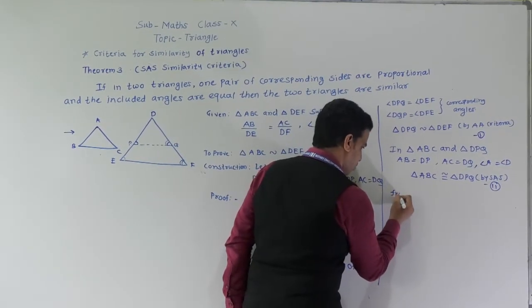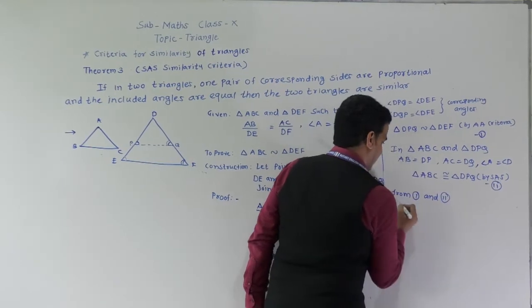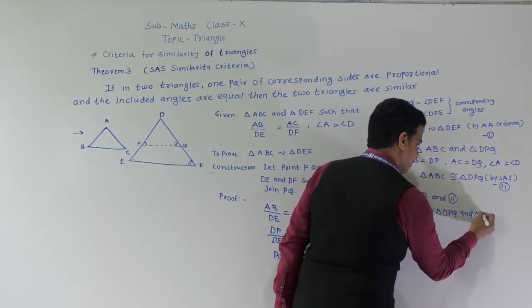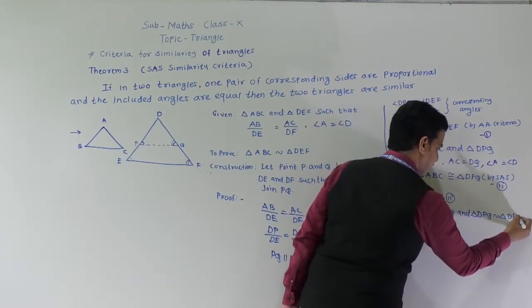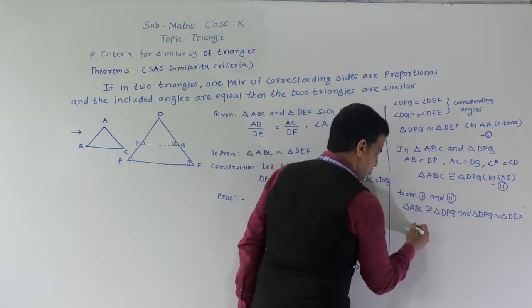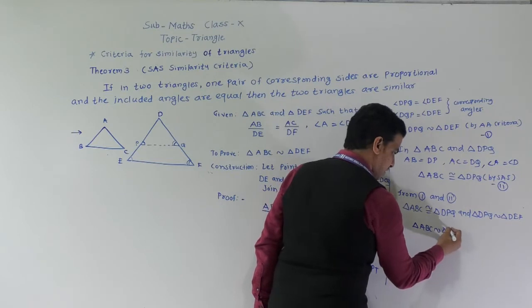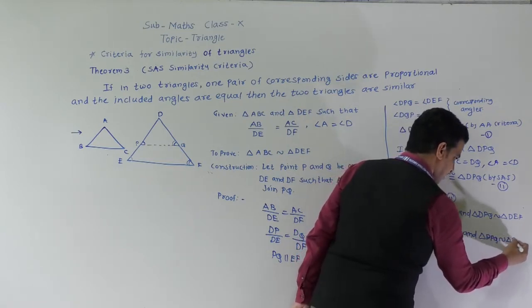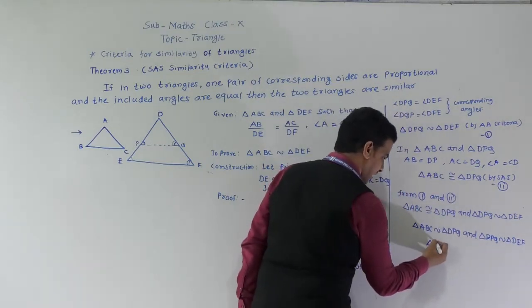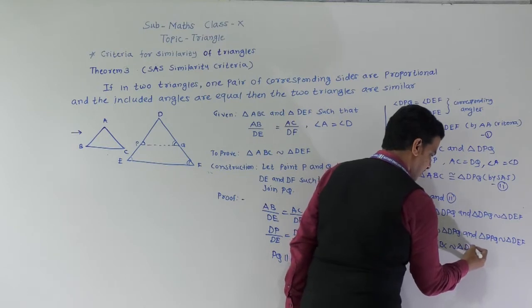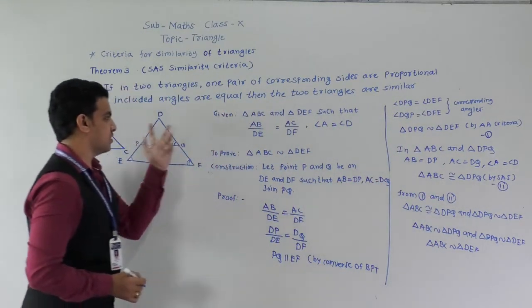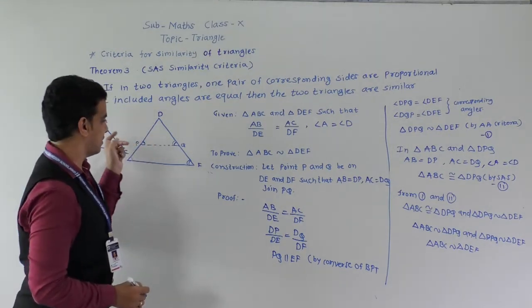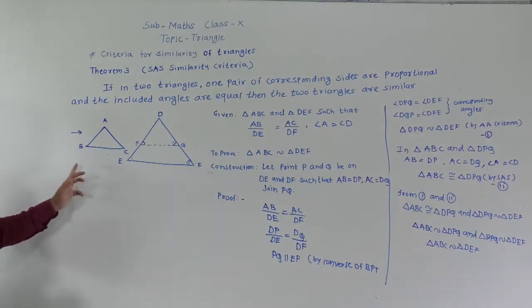Triangle ABC is congruent to triangle DPQ and triangle DPQ is similar to triangle DEF. Therefore triangle ABC is similar to triangle DPQ and triangle DPQ is similar to triangle DEF. So if one pair of corresponding sides are proportional and the included angle is equal, then the two triangles are similar by SAS Similarity Criteria.